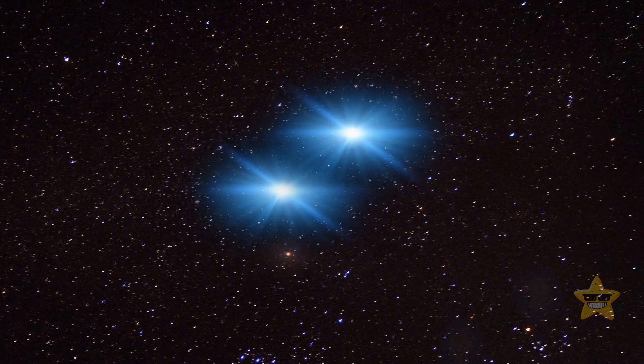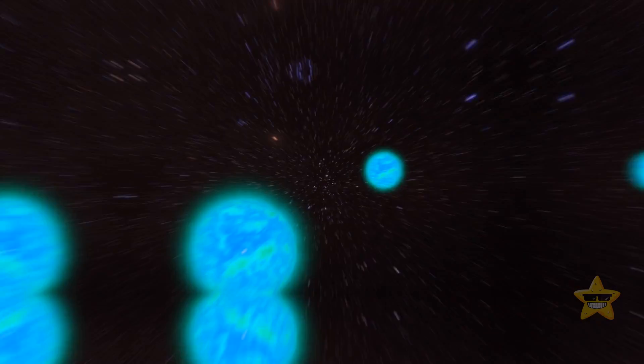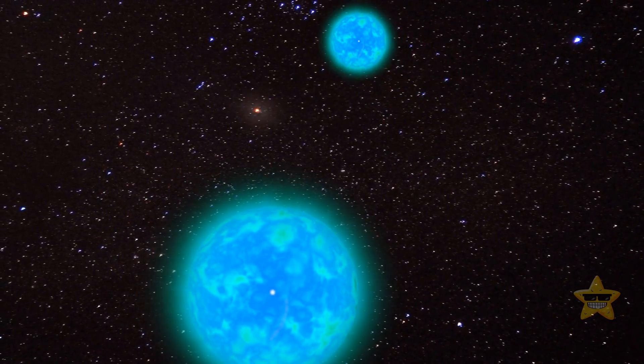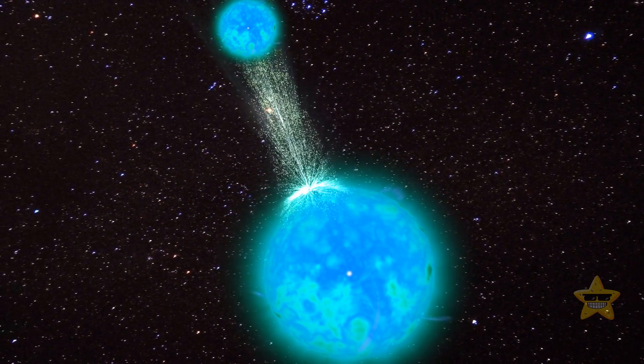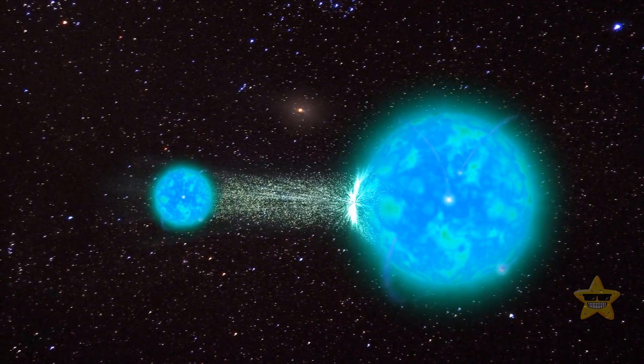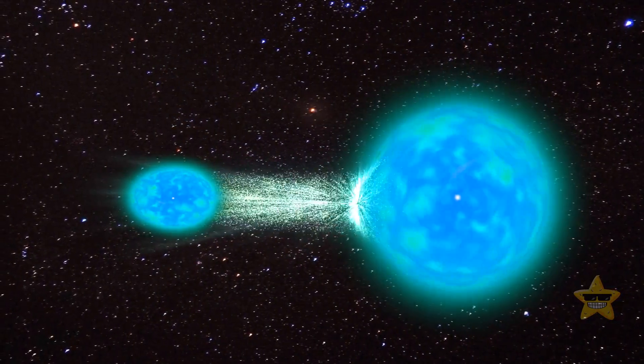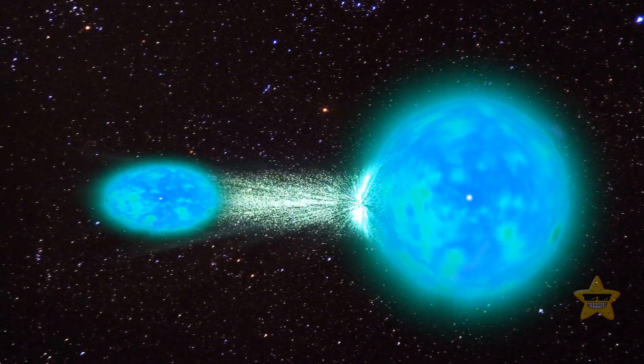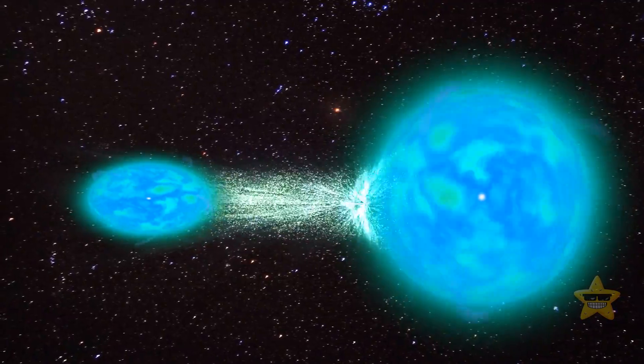But we've still got something cool to observe because they're so close that one of the stars is pulling the atmosphere off the other. Yup, stars have their own vampires too. This vampire star is way bigger and spins faster than the other one. This results in an illusion that they're orbiting each other farther apart than in reality.